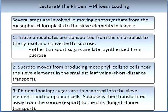Phloem loading is the process where photosynthates move from the chloroplast into the phloem. In this process there are several steps. The first step involves triose phosphates, which are transported from the chloroplast to the cytosol and converted to sucrose. Other transport sugars are later synthesised from sucrose. The second stage is sucrose moving from the producing mesophyll cells to the cells near the sieve elements in the smallest leaf veins — this is short distance transport.